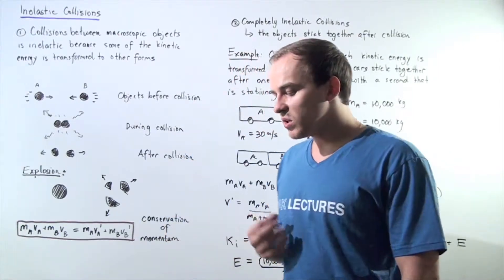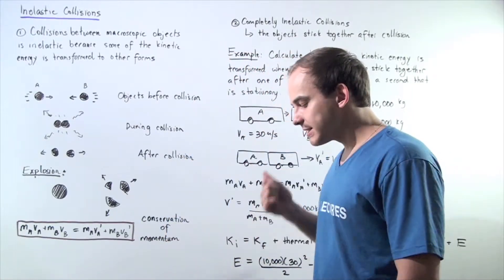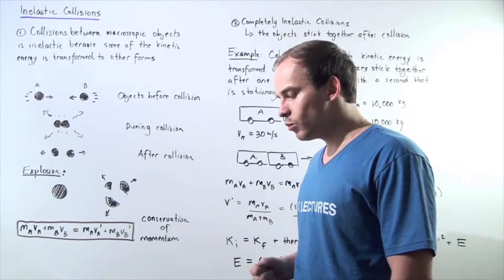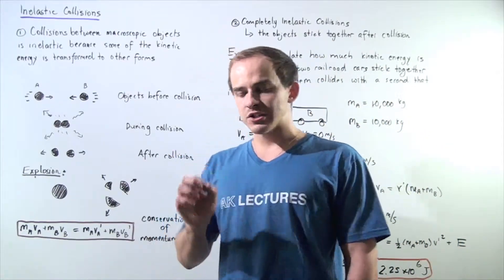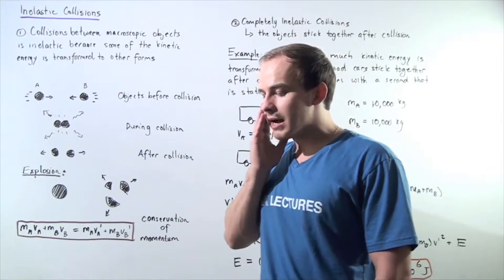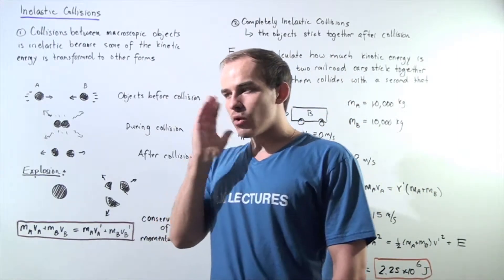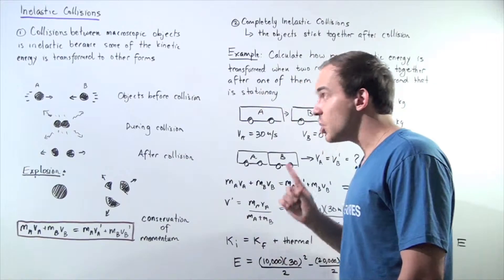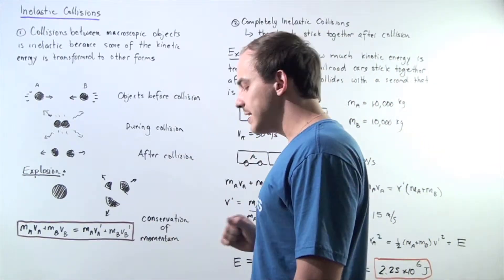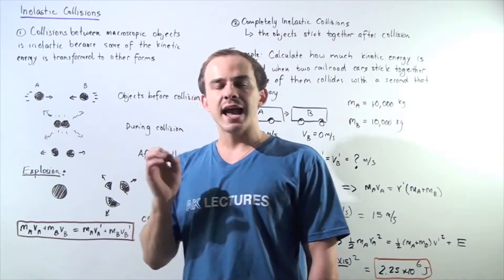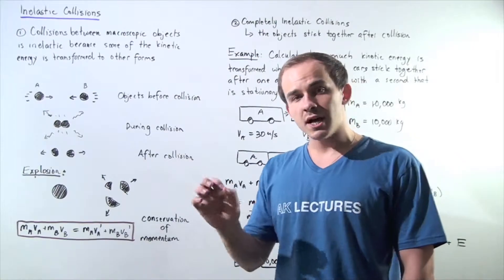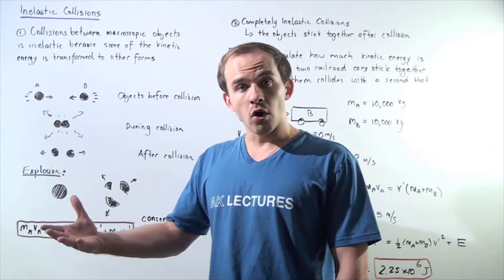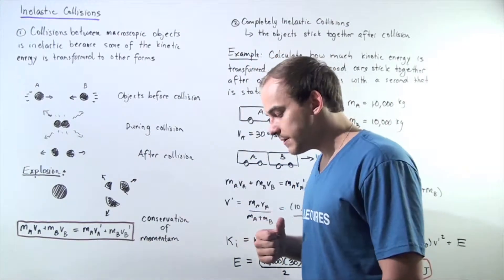In an earlier lecture, we spoke about elastic collisions, and we said that an elastic collision is a collision in which the kinetic energy as well as the momentum of our system of objects is conserved. Now we're going to look at a second type of collision known as an inelastic collision, in which the kinetic energy is not conserved because some of that kinetic energy is transformed into other forms of energy.